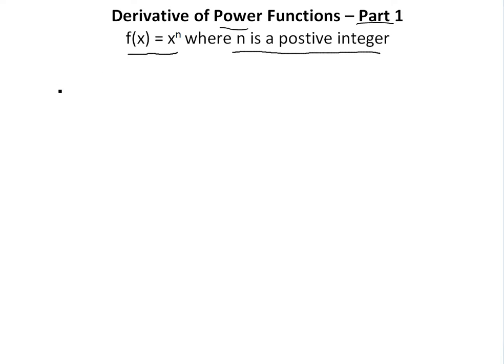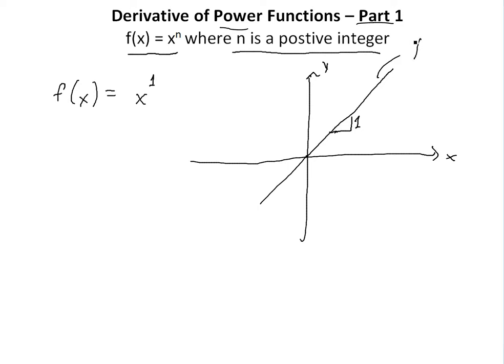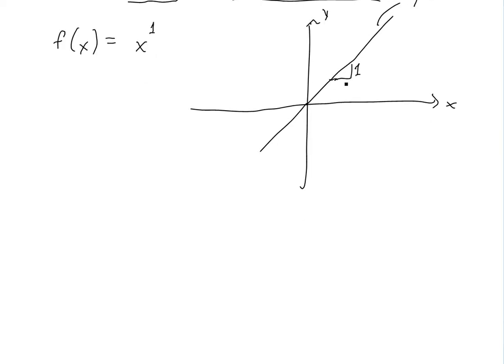So basically, let's start with the easiest power function. So f(x) equals x to the power of 1, so where n is 1. And if you look at the curve of this, this is just a straight line. This is just a 1 to 1 ratio, so it's going to be a straight line. And then the slope here is just 1, because that's basically what it is, is y equals x. Rise over run, it rises and runs at the same amount. So we know that the slope is 1, so f'(x) equals 1.